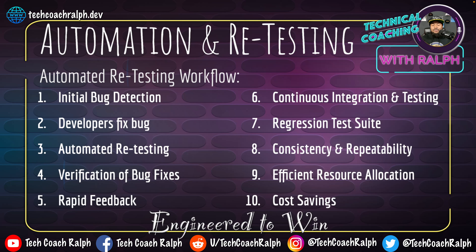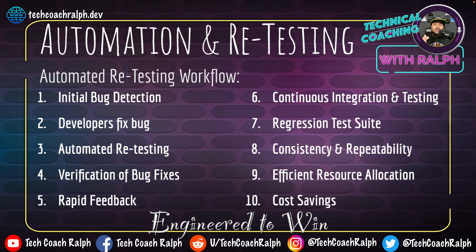Consistency and repeatability: being able to run the same test at the same time in the same manner increases repeatability and consistency — everything is scheduled. There's also efficient resource allocation — people are resources and machines are resources too. Based on how you configure it, you can keep your costs down. Automation and retesting saves costs because you're able to run a lot more tests in a lot less time with a lot fewer people.